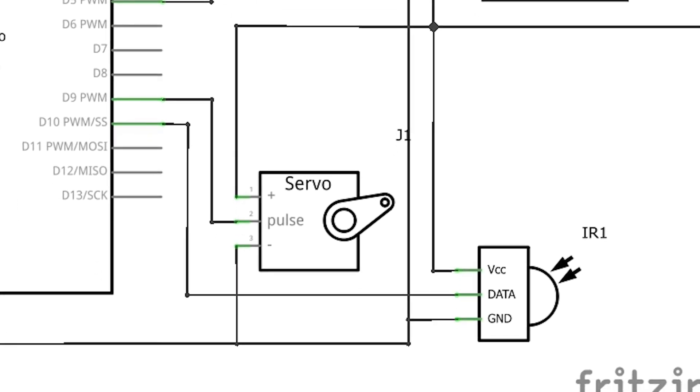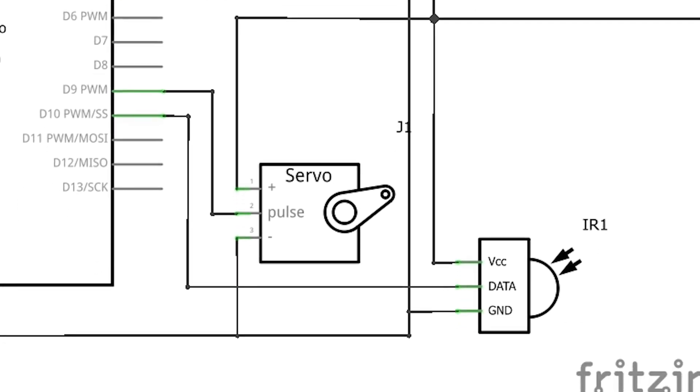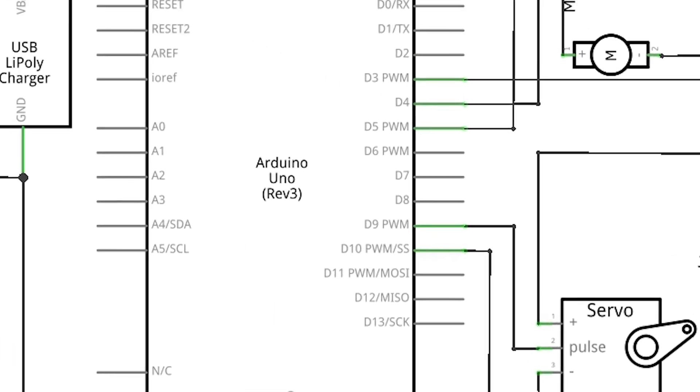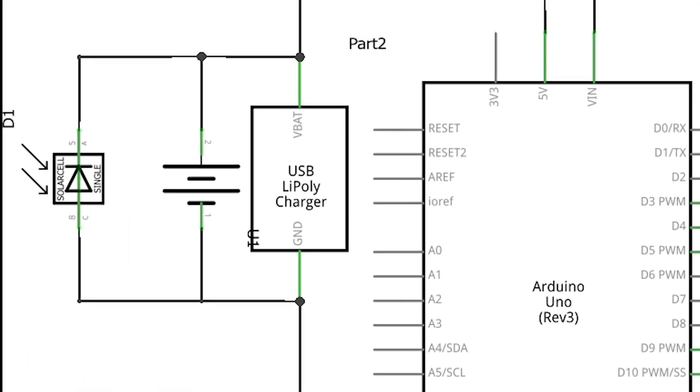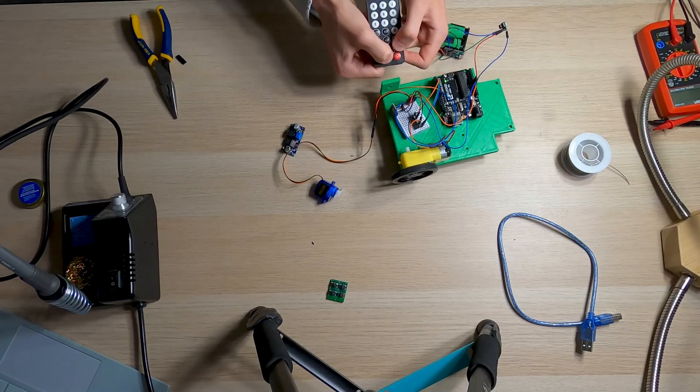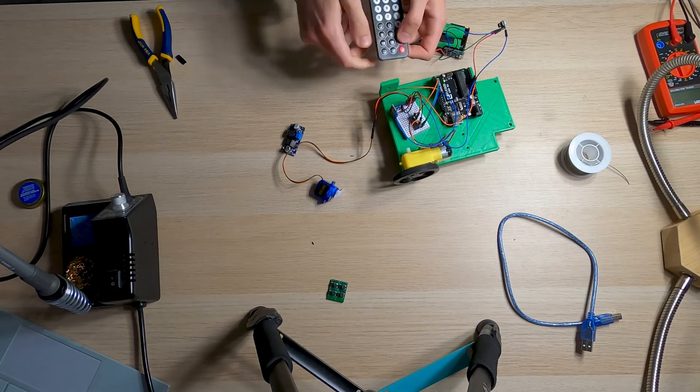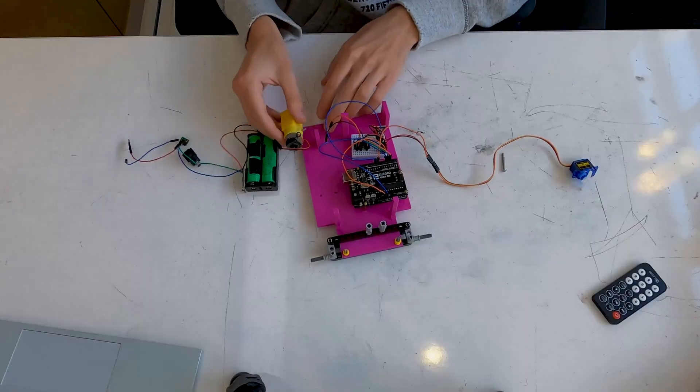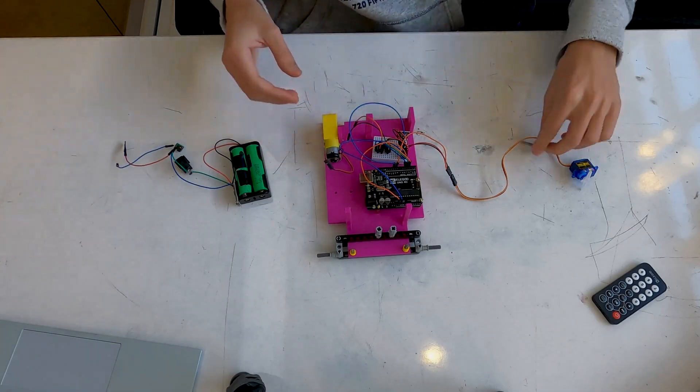Once the hardware was set up, it was time to dive into the coding. I wrote the code to control the motors based on input from the Arduino, allowing me to move the rover forward, backward, and turn in different directions. I also integrated some sensors so the rover can detect obstacles and avoid them, making it smarter and more autonomous.